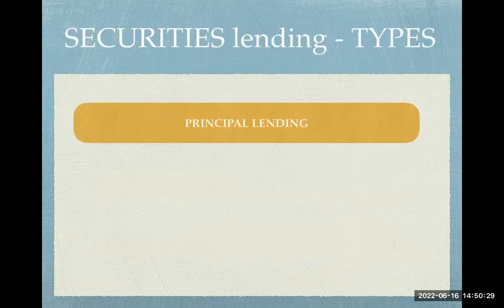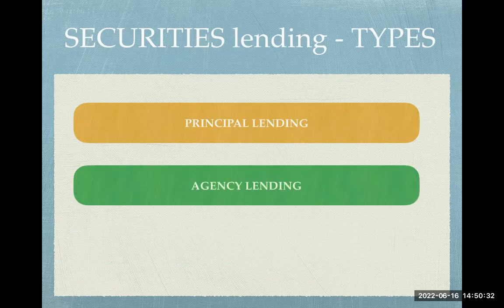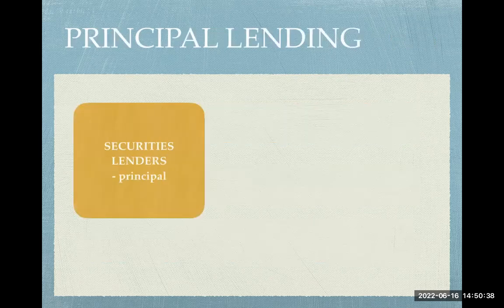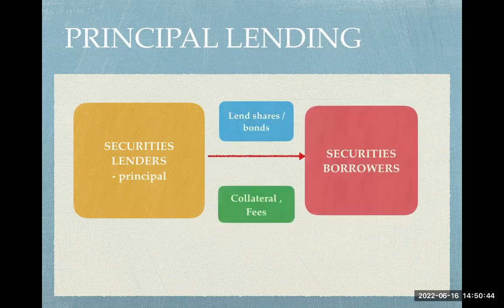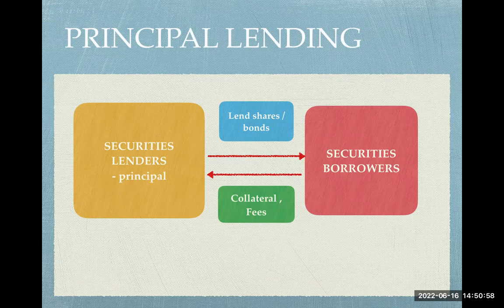There are two main types of securities lending: principal lending and agency lending. In principal lending, the securities lender directly lends shares and bonds to borrowers, who in return pay fees and give collateral. The transaction is directly between lenders and borrowers. This happens when custodians are very familiar with the STO, or mutual funds and pension funds are comfortable with the counterparty and aware of their holding positions.